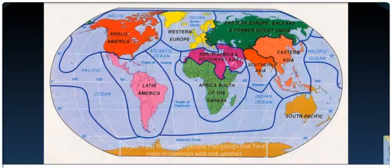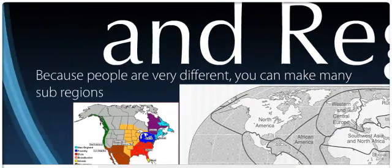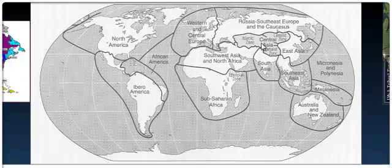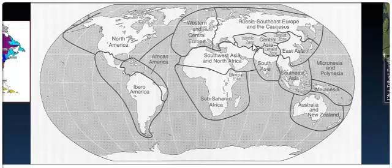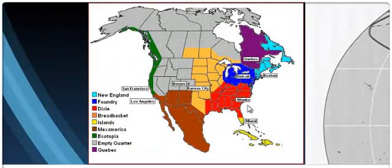Can you get even more specific? Oh yes — people are very different wherever you go, so you can make lots of sub-regions. This is a good map that tells you the differences in Central Asia. It's divided along religious lines and further separates East Asia as well.